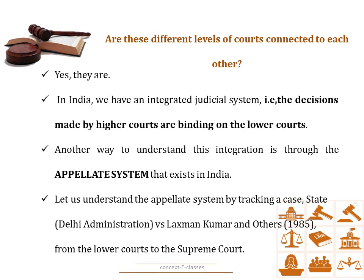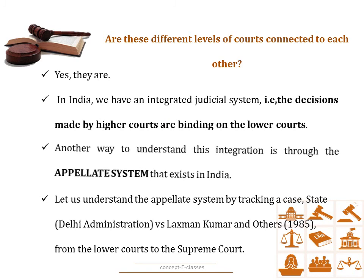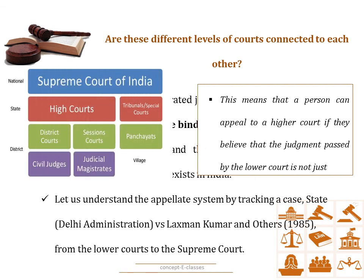Are these different levels of courts — the Supreme Court, the High Court, and the District Courts — connected to each other? Yes, they are. In India, we have an integrated judicial system, meaning the decisions made by the higher courts are binding on the lower courts. We can understand this integration through the appellate system that exists in India. The appellate system means that a person can appeal to a higher court if they believe that the judgment passed by the lower court is not just. Let us understand this by tracking the case State Delhi Administration versus Lakshman Kumar and others, 1985, from the lower courts to the Supreme Court.